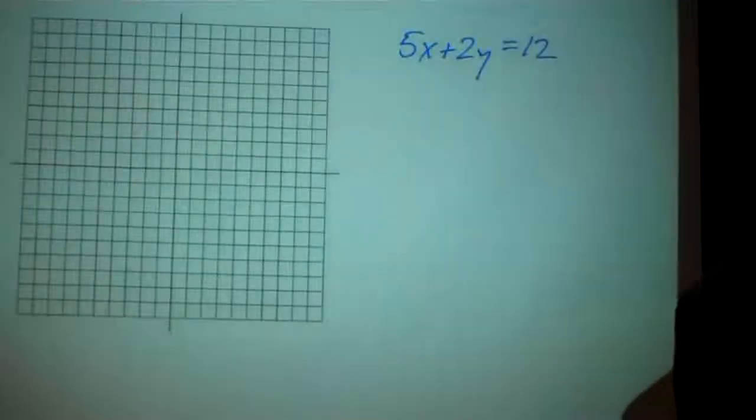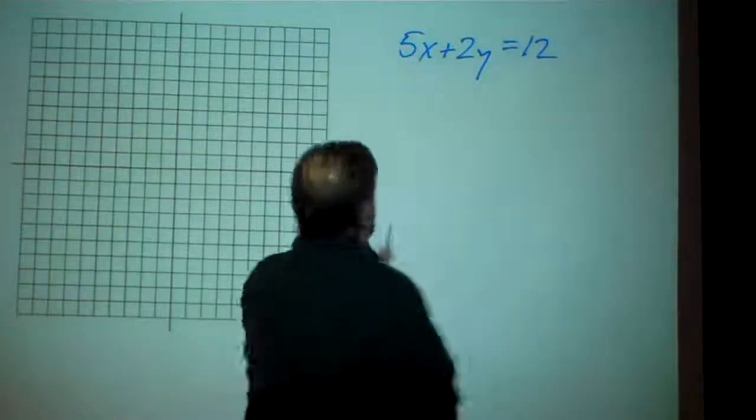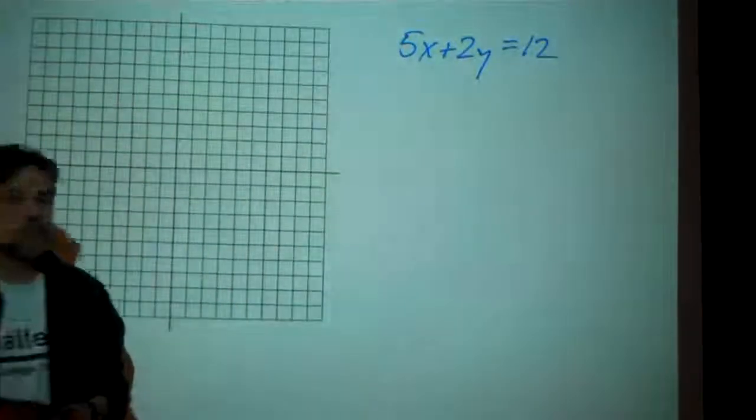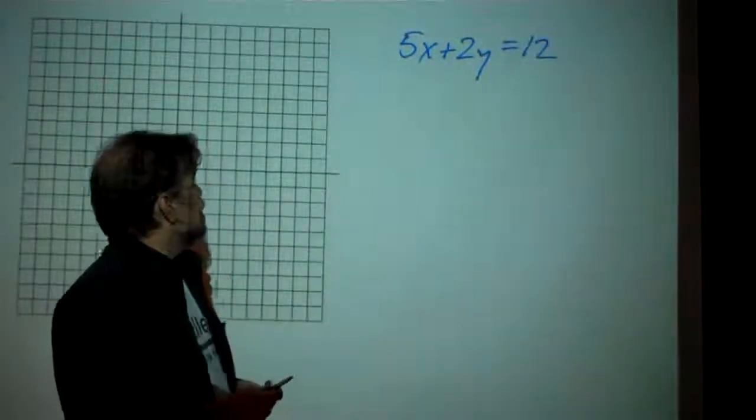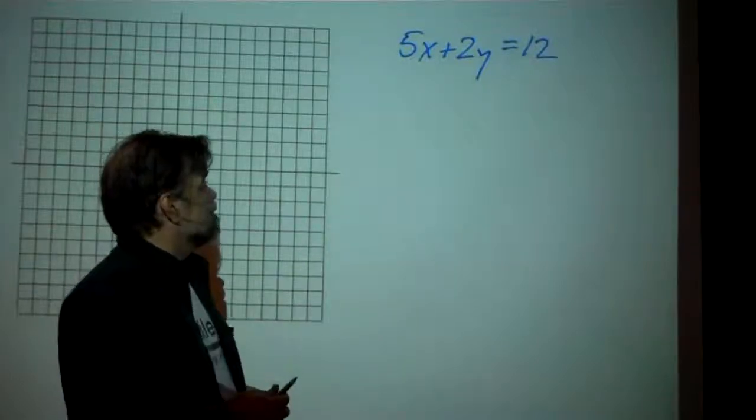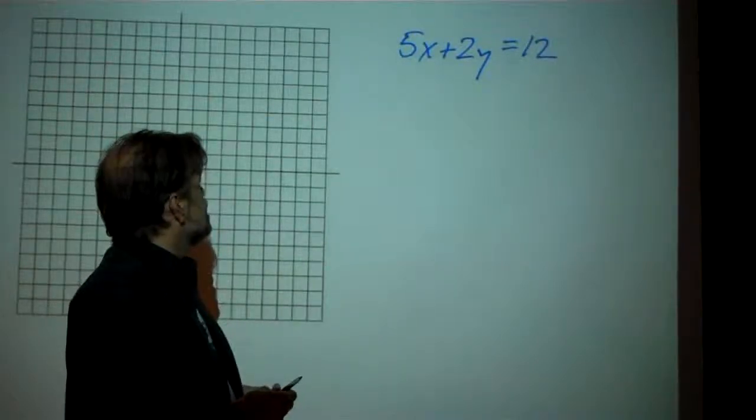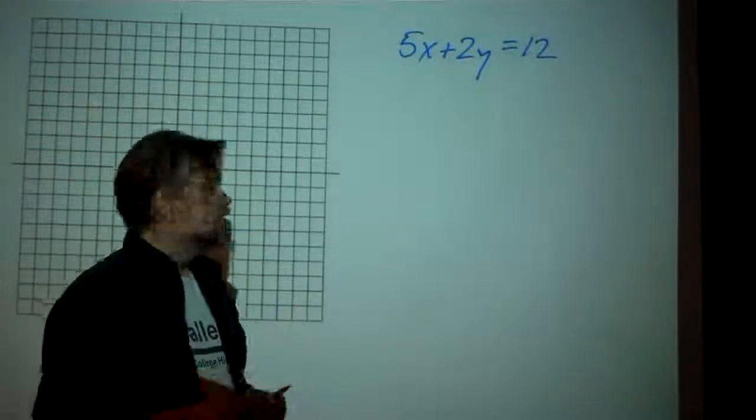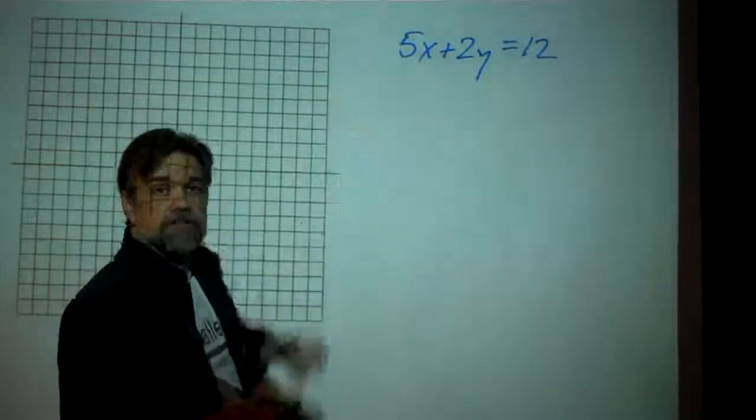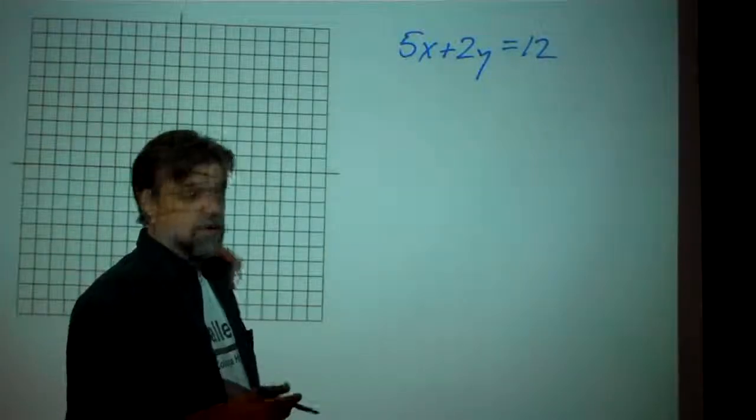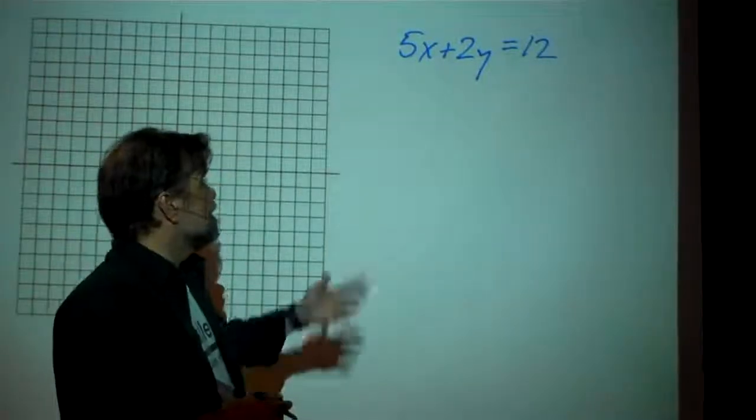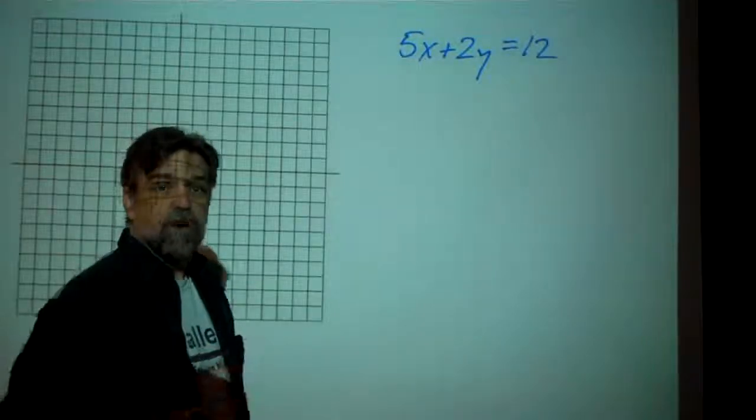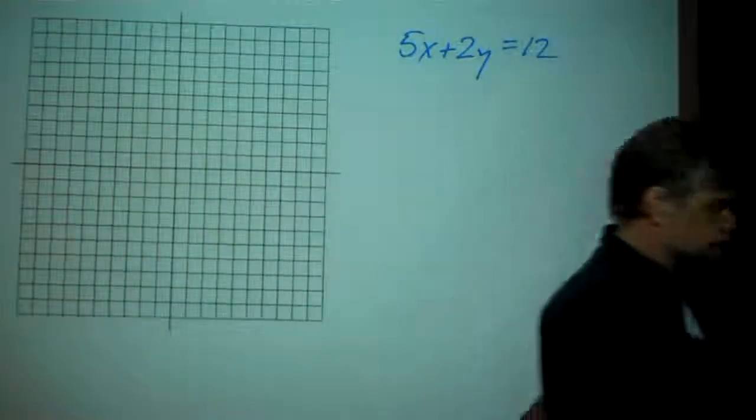First off, here's one. We have the equation 5x plus 2y equals 12. So I want to graph this, and I'm trying to think, how can I graph this thing? Well, the easiest thing to do is just convert this to slope-intercept form. And the way you convert it to slope-intercept form is by just solving for y. So let's solve for y.